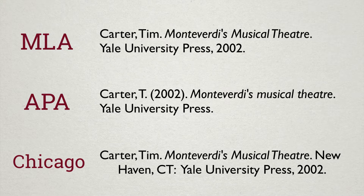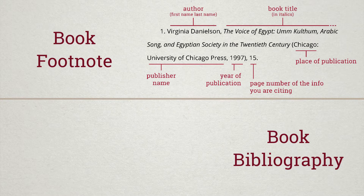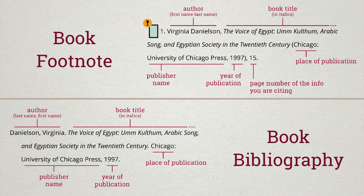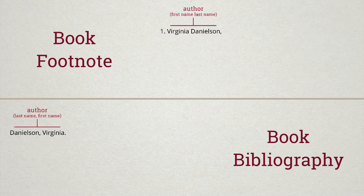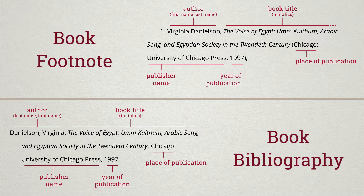Here are footnote and bibliography examples of a book citation using Chicago style. Notice the indent in the footnote style and a paragraph adjustment in the bibliography style. Both start with author, then the title of the book, followed by place of publication, publisher name, and year of publication. The footnote style needs a page number for the information you are using, while the bibliography style does not.